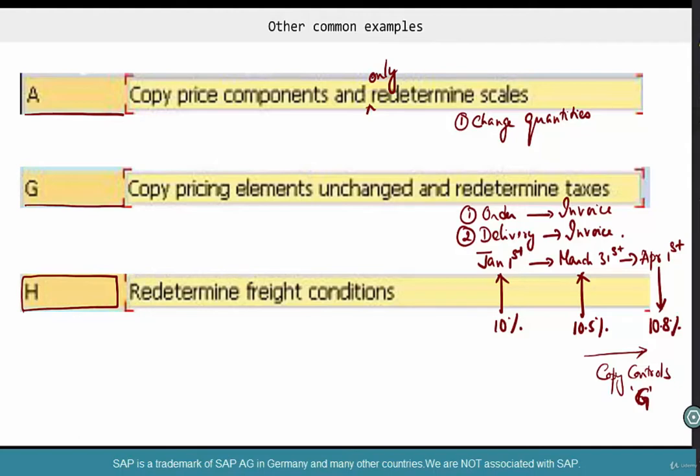Basically, these are different ways of redoing pricing. Whether you want to redo price, whether you want to only redo certain elements, whether you do not want to redo anything, whether you do not want to redo anything except for scales. So, based on the condition types, condition categories, whether it's manually entered or not, whether scales are there or not, based on these combinations.